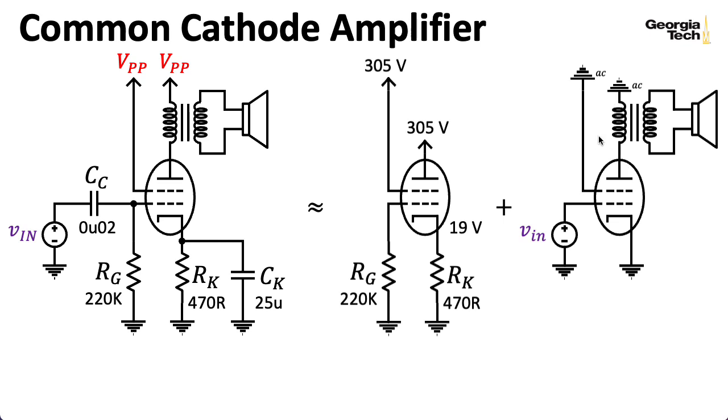Of course, if you hook an ohmmeter up to the transformer and measure the DC resistance, it won't be exactly zero, but it will be pretty small. It will be negligible compared with RK.